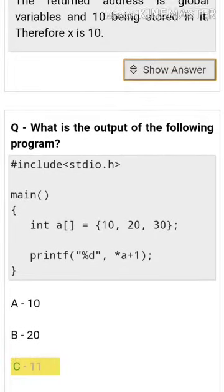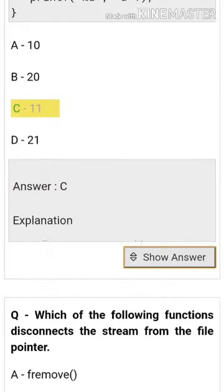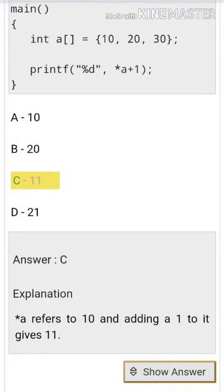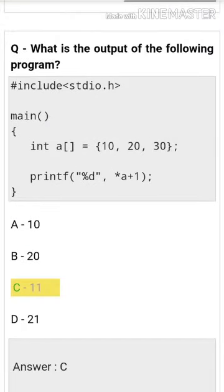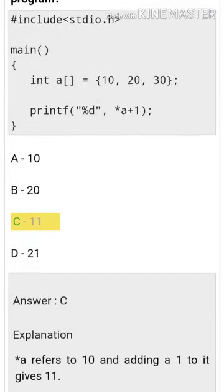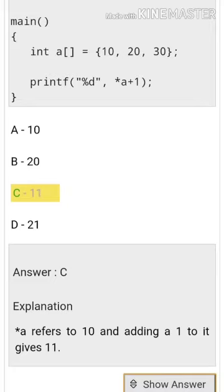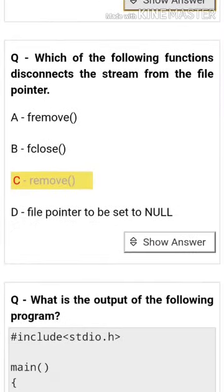What is the output of the following program? It refers to a pointer. The answer is 11. Adding one to the pointer gives 10 plus 1, which equals 11.